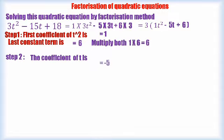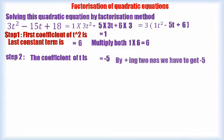That is why we are looking for two minus numbers. When we multiply two negative numbers, then we are going to get positive number and as well as the same numbers added together, we have to get -5.